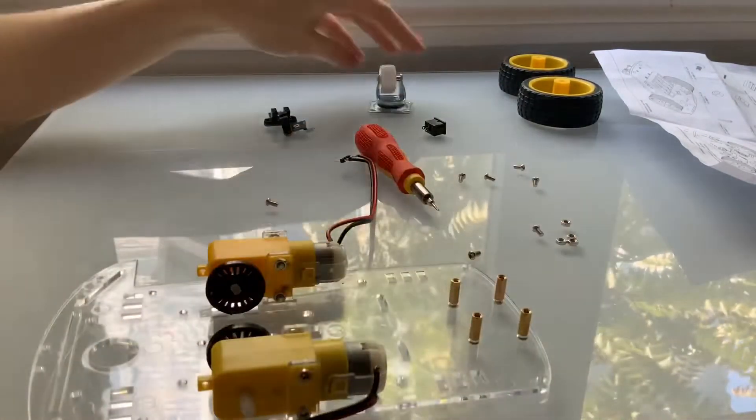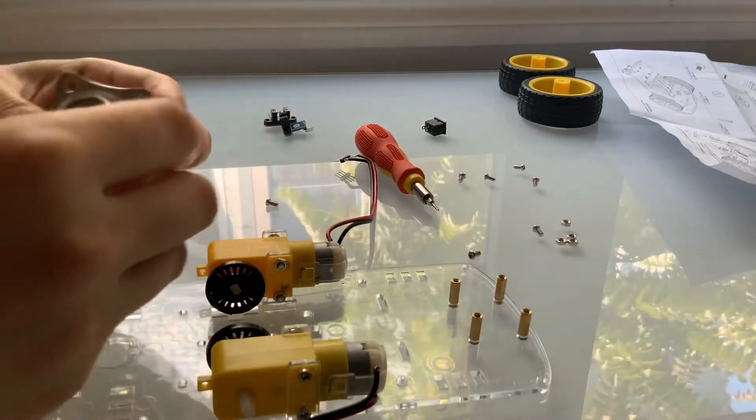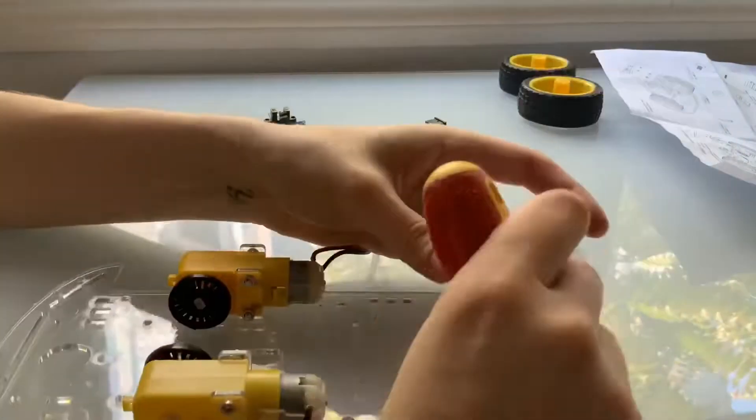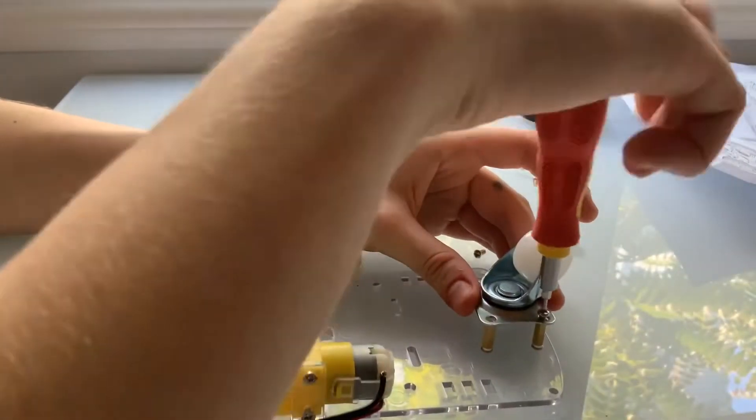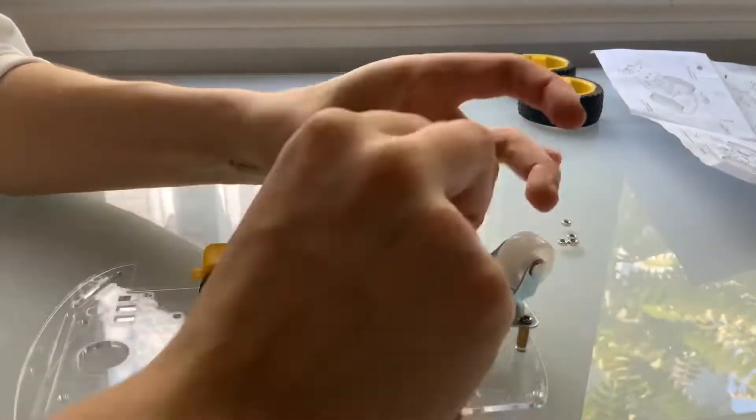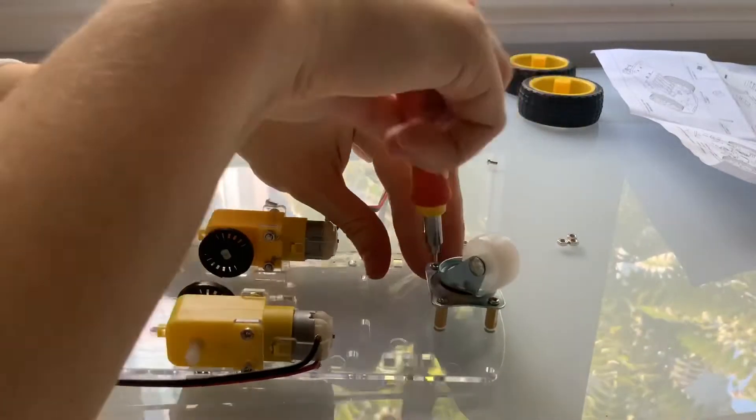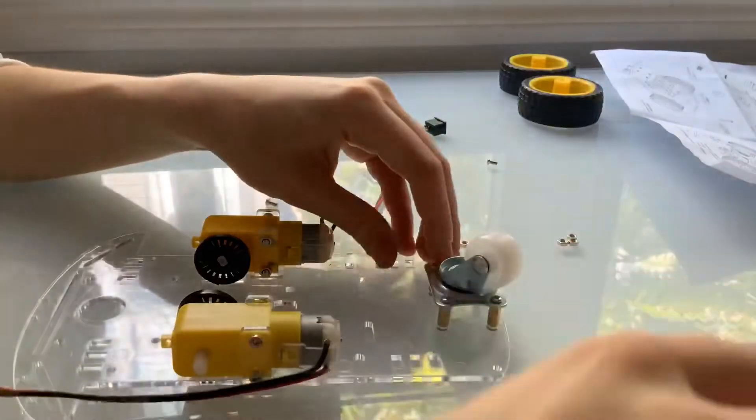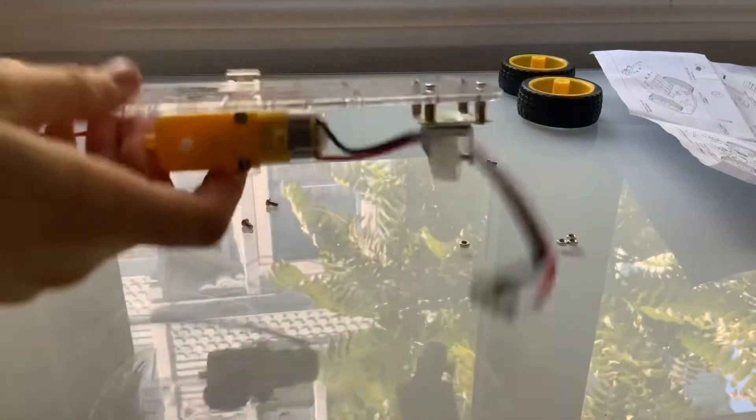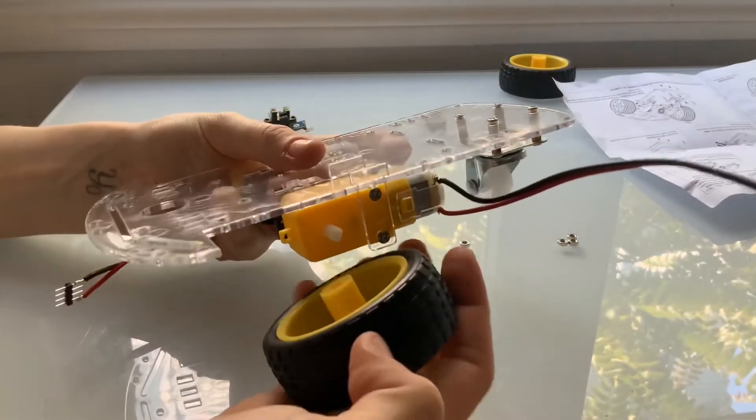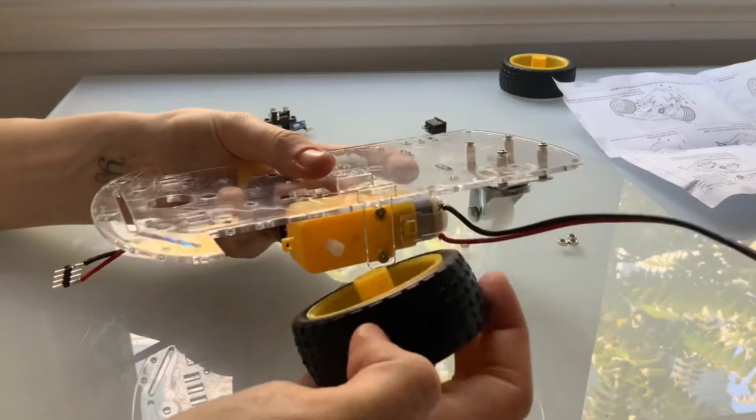Now that you've attached the standoffs, we can move on to the actual caster wheel itself. Just use the four remaining screws to fix it to the standoffs. Okay, now we can attach the actual wheels, so be careful when you're aligning these with the axle.